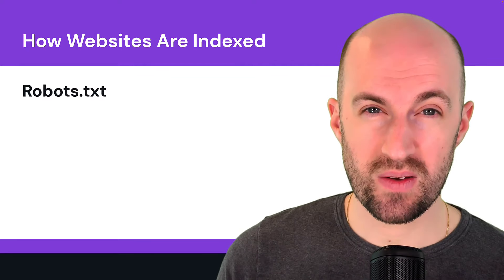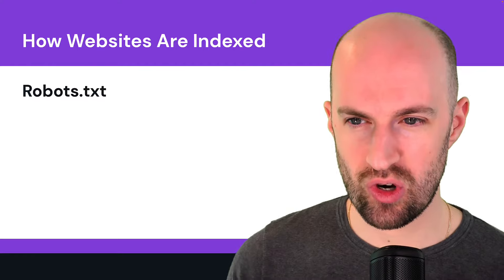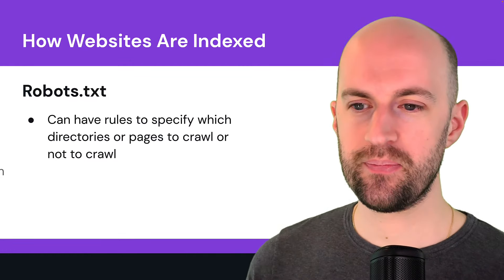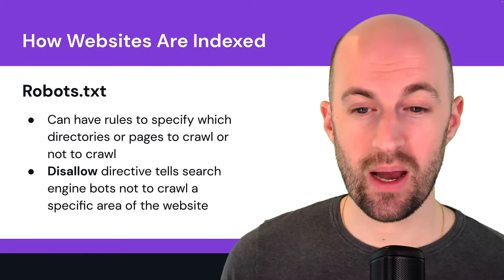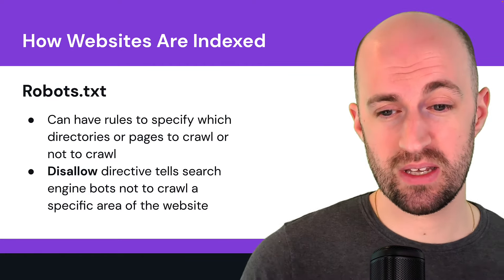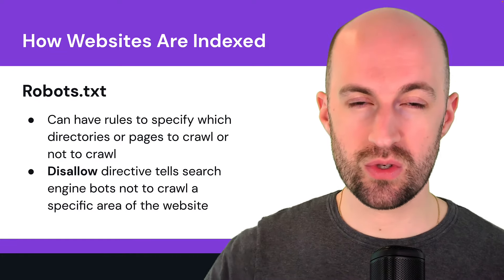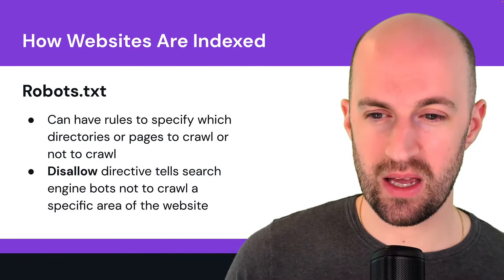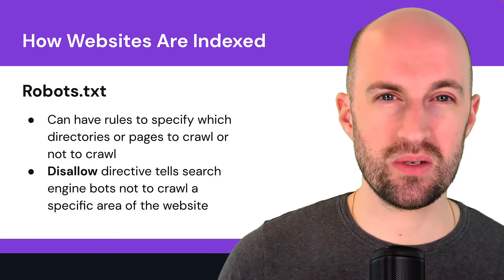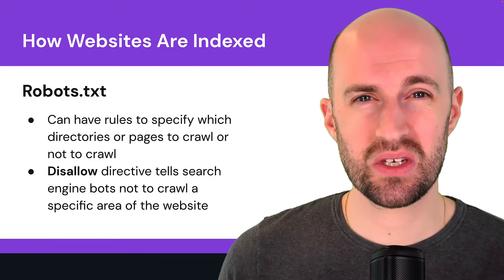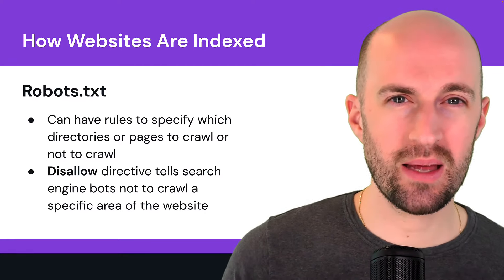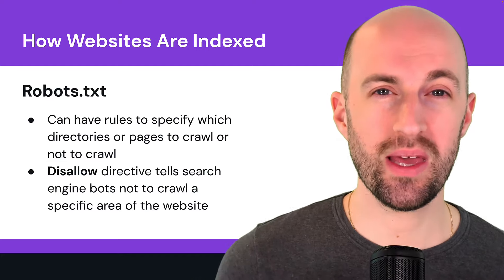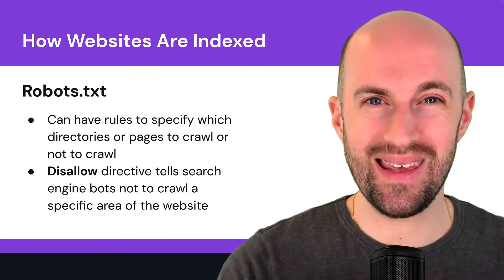Here's an example of that tag — in the content attribute you put 'noindex.' Finally, robots.txt is a file that lives on the server. You can set rules to specify which directories or pages to crawl or not crawl. The 'disallow' directive tells search engine bots not to crawl a specific area or page. Key point: disallow does NOT stop a page from being indexed — it only stops crawling. If the page is already indexed, it will remain indexed.